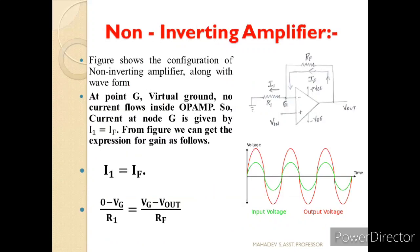Now let us see the concept of the non-inverting amplifier. This is the configuration where the supply is given to the positive terminal and the negative terminal is connected to ground through resistance R1. The current is coming from Vout to point G and going to ground. As we know, the input impedance is very high, so no current enters the op-amp. The green one is the input voltage and the red one is the output voltage — they are in the same phase but with amplified output.